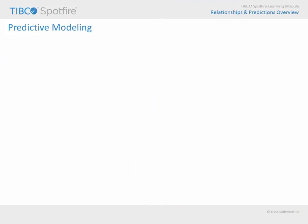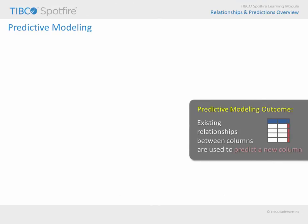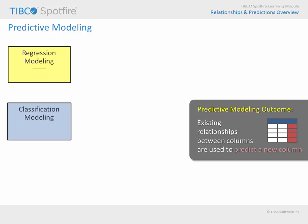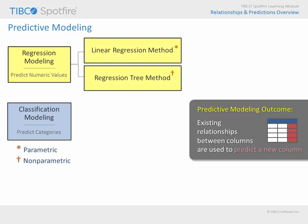While data relationship comparisons allow you to discover and evaluate relationships between columns, the predictive modeling tools allow you to use those relationships between existing columns in order to predict values which are not currently available. Two types of predictive models are available: regression modeling and classification modeling. Regression modeling is useful for making numerical predictions and classification modeling is useful for making predictions for categorical assignments. Regression modeling will provide two models to choose from, depending upon whether it is more appropriate to apply parametric or non-parametric statistical methods to your data. Linear regression is a parametric method which models the numeric response column as a weighted sum of the predictor columns, while regression tree is a non-parametric method that creates a binary tree by recursively splitting the data on the predictor values.